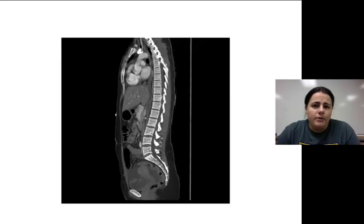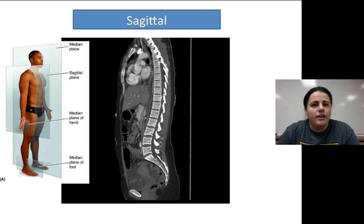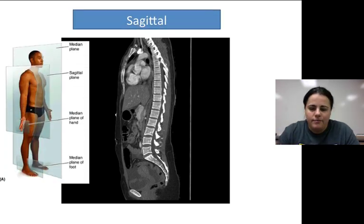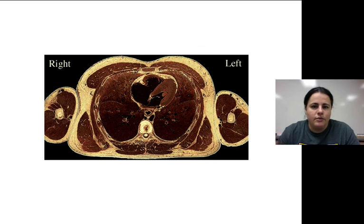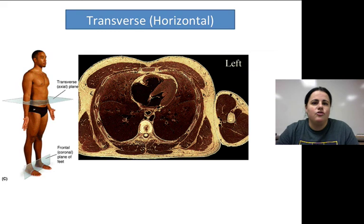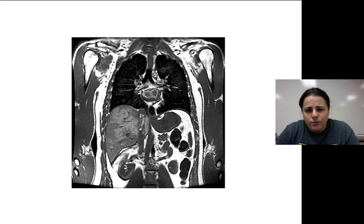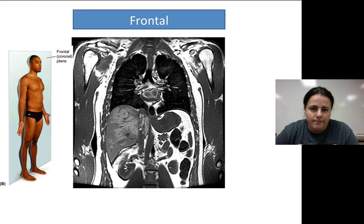Here are three examples. If you guessed a sagittal section for the first one, you're correct — it made a left and right. The second one went through the torso and arms, requiring a transverse or horizontal cut. The third shows the lungs, heart, and some organs — that was made by a frontal cut. Those are the three planes of section and the directional anatomical terms. Hopefully that was helpful.